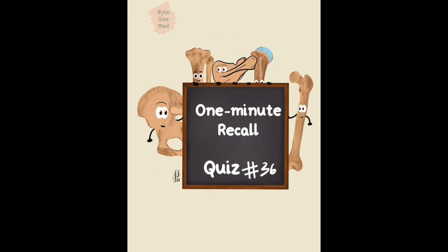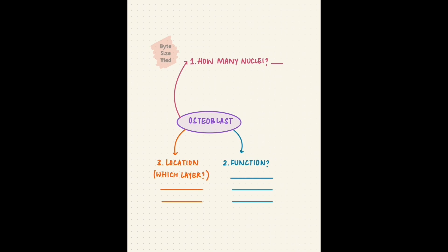Bone is tissue, and tissue has cells - bone cells, like the osteoblast. Your task is to recall: how many nuclei this cell has, what's its function, which layer of bone is it located in, and it has a receptor for an important hormone that regulates calcium - name that hormone. You can pause the video here.